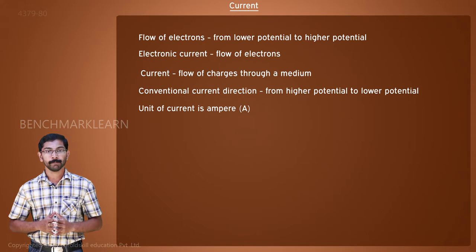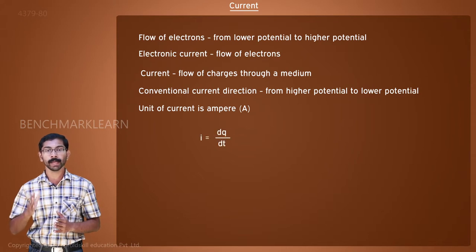From the definition, we can formulate an expression for current as I is equal to dq by dt.